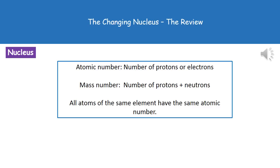Welcome to our review on the changing nucleus. First thing is a couple of terms that we've already met in our chemistry. The atomic number, if you remember, is the number of protons or the number of electrons present within an atom. And the mass number is the number of protons plus the number of neutrons.